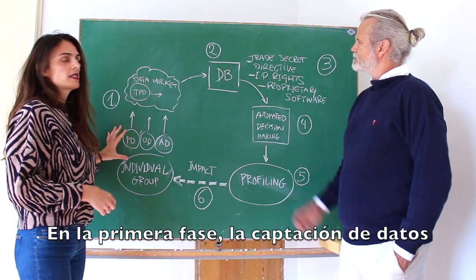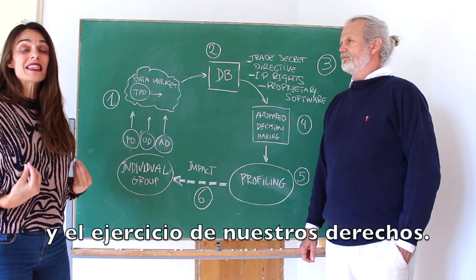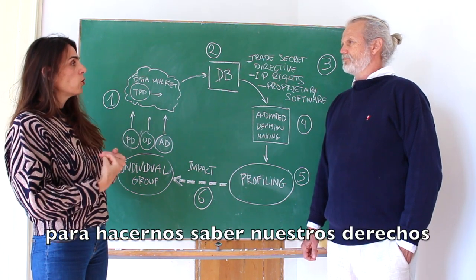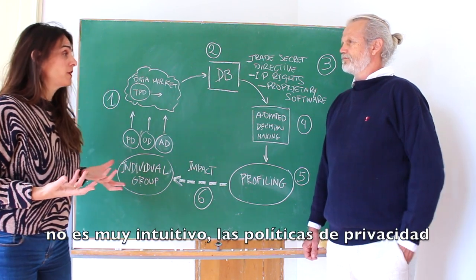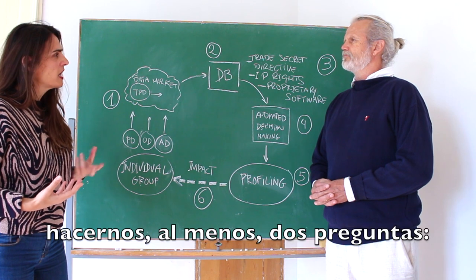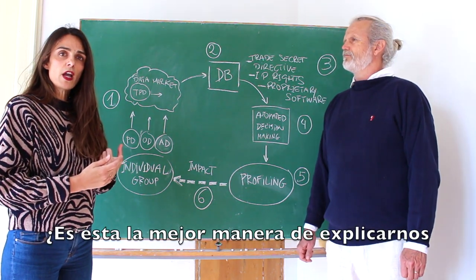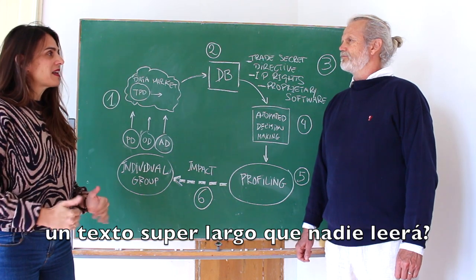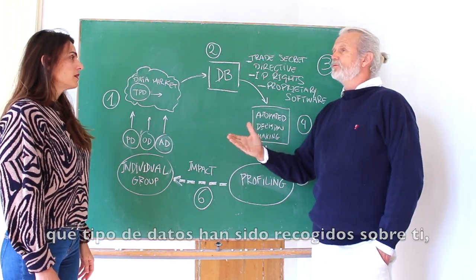So in the first stage, the collecting stage, the main issue is the information that we have to have from companies and the exercising of our rights. That's the reason why the format that the company uses to let us know our rights is very important. Right now we have a format that is not very intuitive — these are the privacy policies that you say yes I accept it, but we don't read it. That's the reason why we have to ask ourselves whether this is the best format and the best way of explaining our rights, given that it's a super long text that nobody is going to read. It's a right to know what kind of data is being collected and which rights you have.